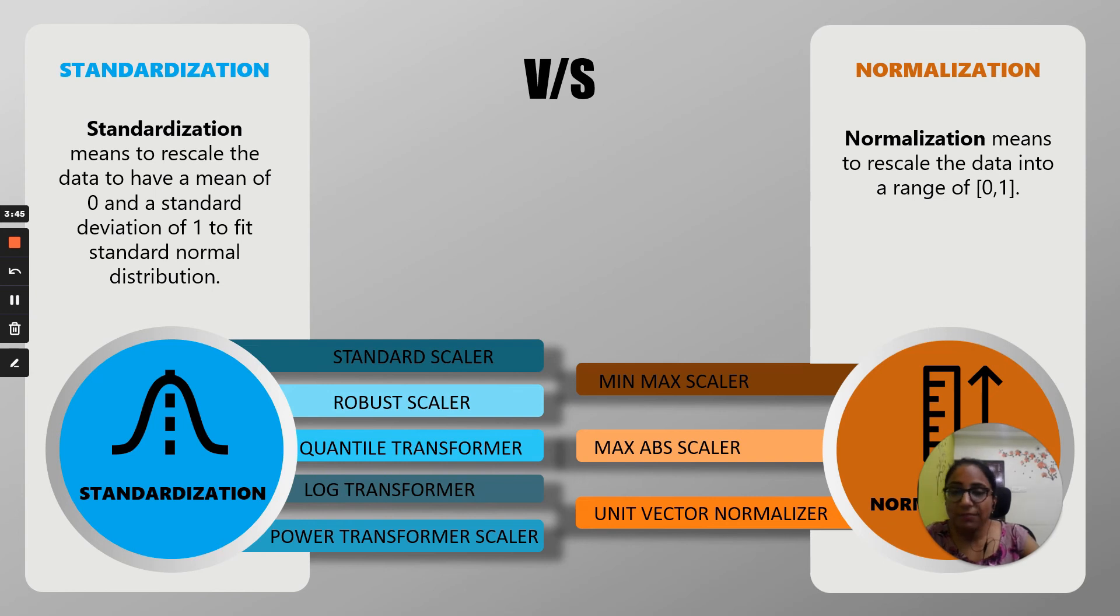If your data is not following a Gaussian distribution, then you can go with normalization. If it follows the Gaussian distribution or the normal distribution and you want to rescale the data, then you should go with standardization. But again, there is no set rule. This is the groundwork that you can do, but there is hit and trial that you have to see which is giving you a better output.